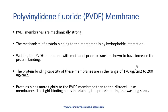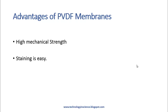Now let's look at the PVDF membrane. PVDF membranes are mechanically strong, and the mechanism of protein binding to the membrane is by hydrophobic interaction. Wetting the PVDF membrane with methanol prior to transfer increases the protein binding capacity. The protein binding capacity is in the range of 170 to 200 microgram per centimeter square. Protein binds more tightly to PVDF than to nitrocellulose membrane, and this tight binding helps in retaining the protein during washing steps. The advantages are high mechanical strength and an easy staining process.